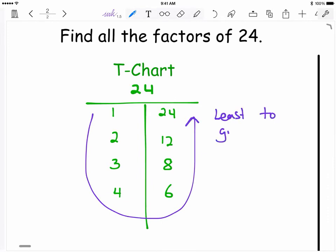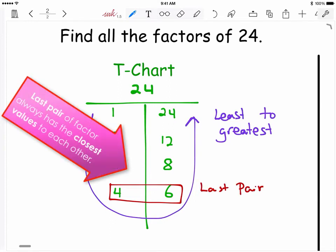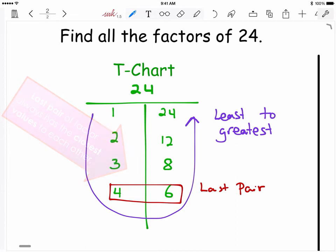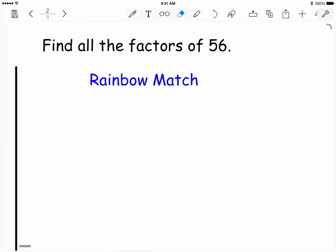Now the last thing I want to point out in this t-chart method is that the last pair of factors on the list always has the closest values to each other, which means they have the smallest gap in between each other. 4 is only 2 units away from 6, while the pair above has 5 units from each other, and the gap gets larger and larger as you go up the list.